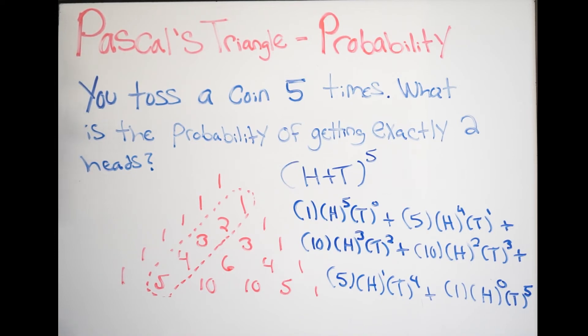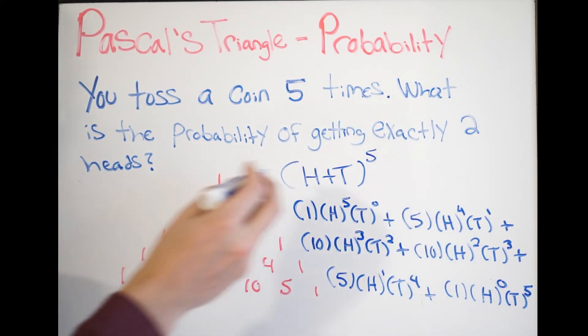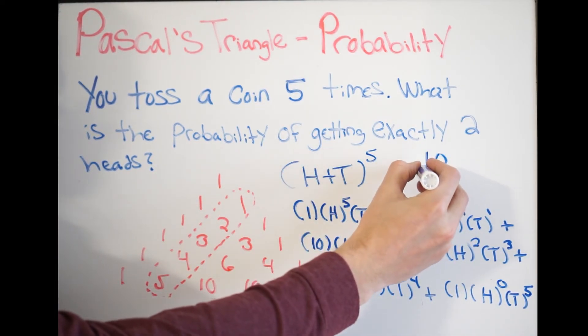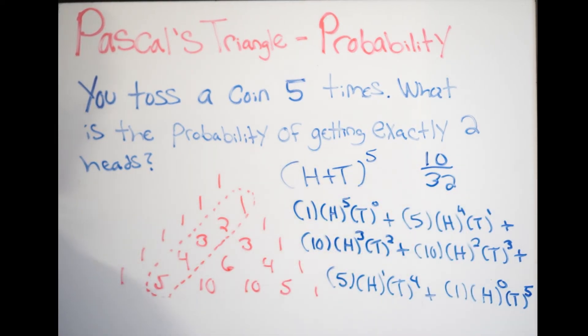So, again, all we have to do is set this up now. So, it says there are 10 possible outcomes of getting exactly two heads. So, I have here 10 out of my total possible outcomes, which is going to be 32. Again, just add your coefficients. This is going to be 32.